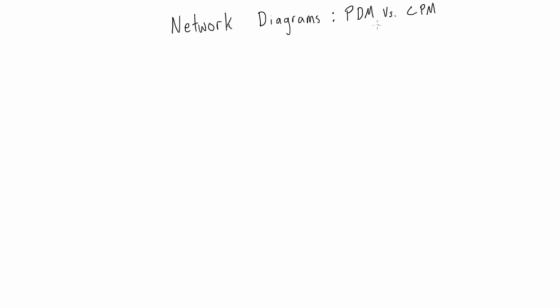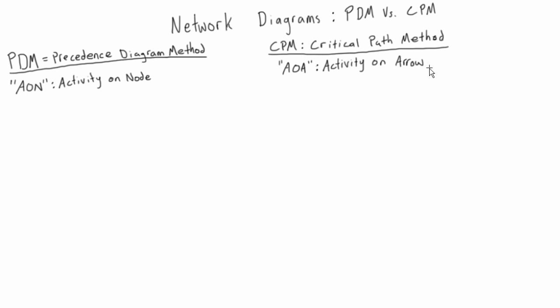When we talk about network diagrams there are two types we can use. There's PDM, which we've been using up until now, and the one we will introduce in this video is called CPM. By now you're familiar with the PDM network diagram, and the thing to note about this is that it is activity on node.